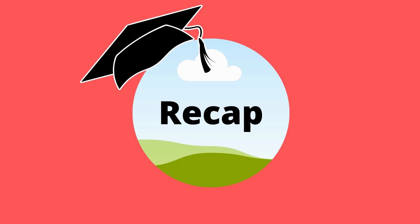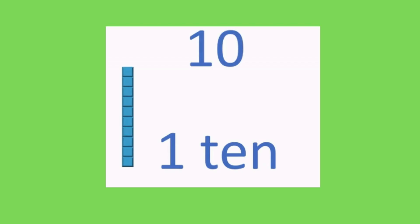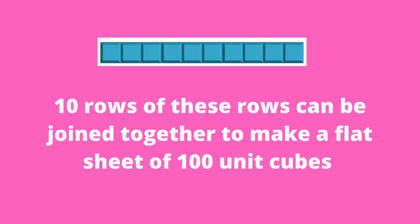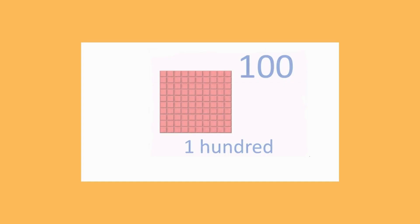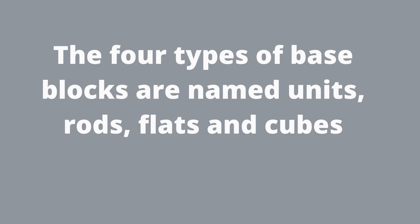Now let's have a recap of this lesson. The smallest value is one unit cube block, which is worth one. Ten blocks will make one row of tens. Ten rows can be joined together to make a flat sheet of 100. Similarly, ten flat sheets will make one cube of one thousand. The four types of base blocks are named: units, rods, flats, and cubes.